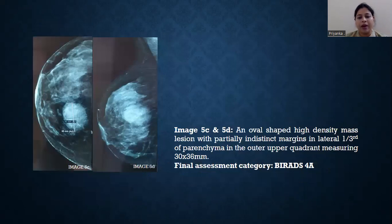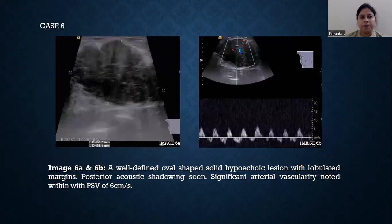On mammogram, it was seen as an oval-shaped, high-density mass with partially indistinct margin in the lateral one-third of the parenchyma. It was assigned BI-RADS 4A.